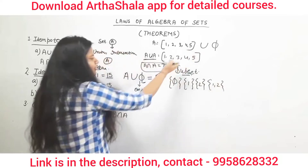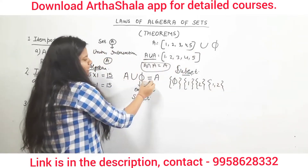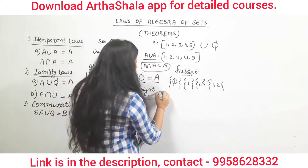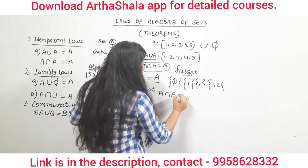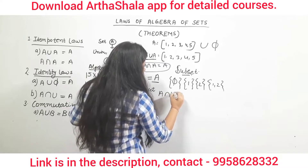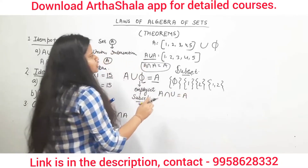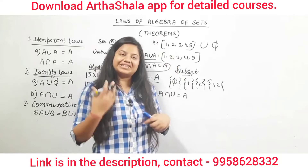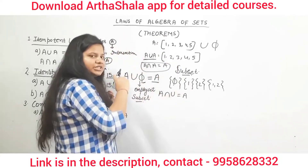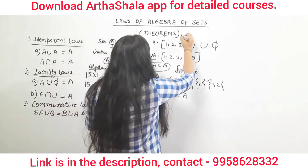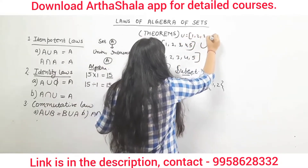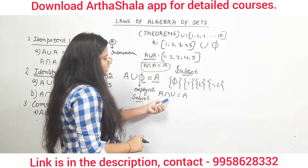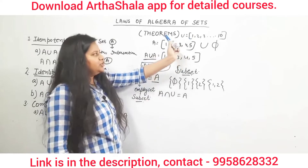So if we have A union Φ, that would be equal to A. This means that if we take any set and perform a union with the empty set Φ, our original set comes back out. Φ is the empty set, as explained in the previous video. Φ is also a subset of every set. Now, A intersection U — where U means the universal set, the set containing all elements we want to consider — A intersection U will be equal to A.